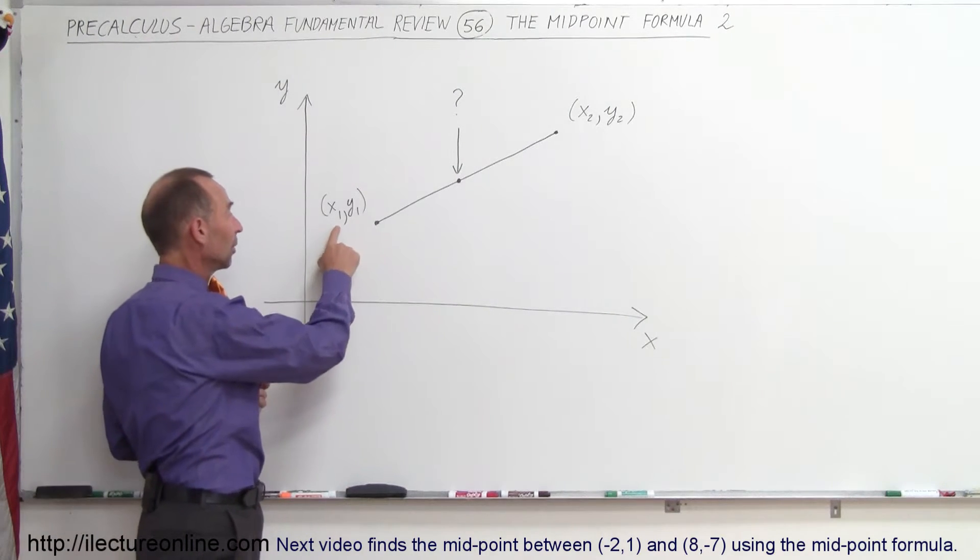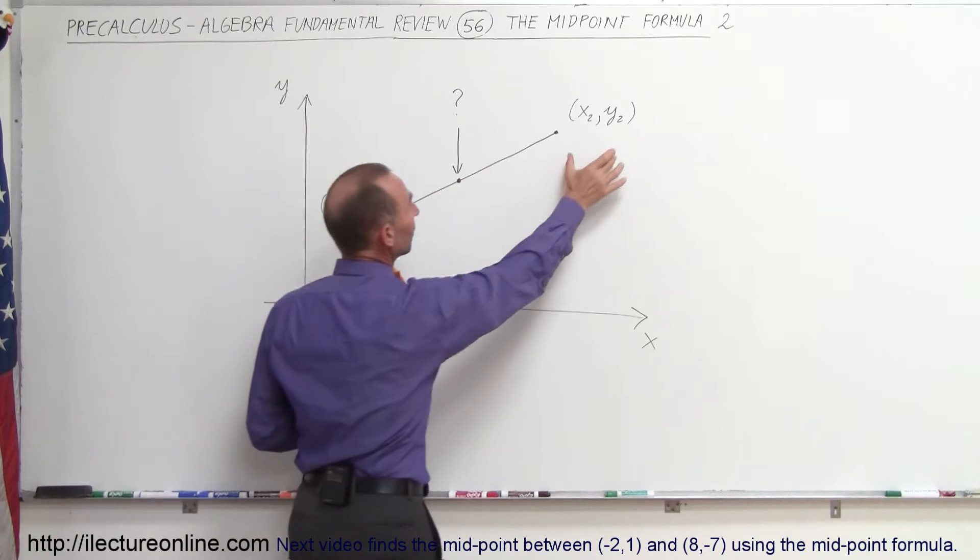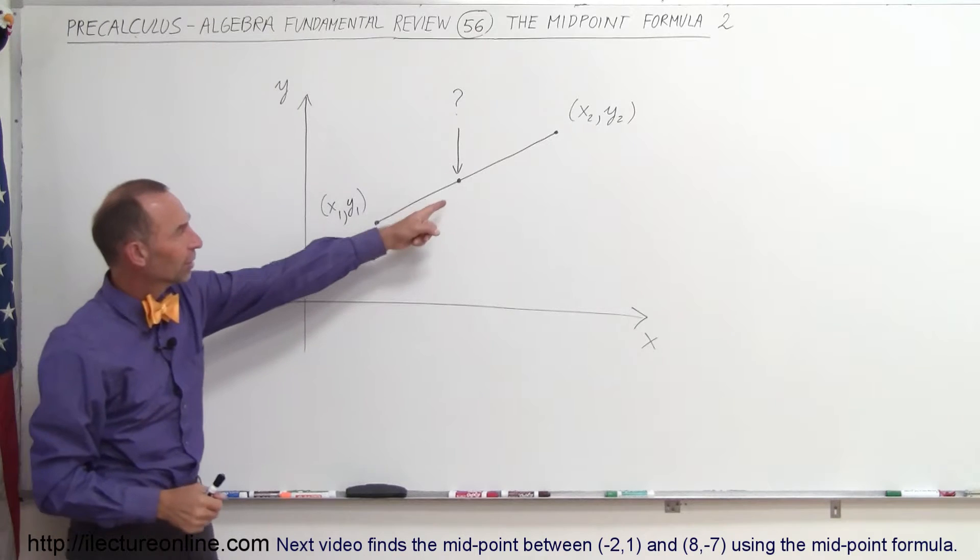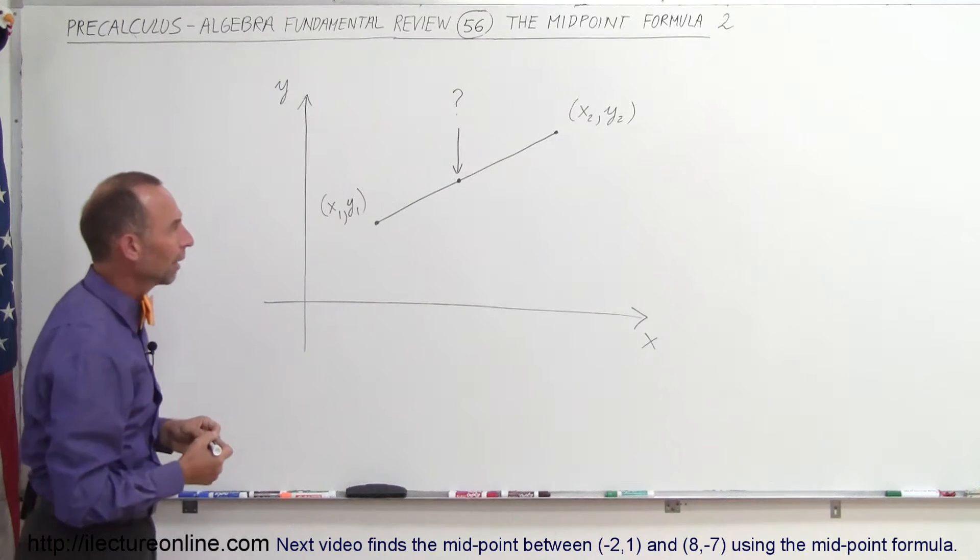Our first point, point 1, is X1, Y1 with its coordinates, and here X2, Y2 are the coordinates of point number 2, and you can see that visually the midpoint would be somewhere in that neighborhood right there.